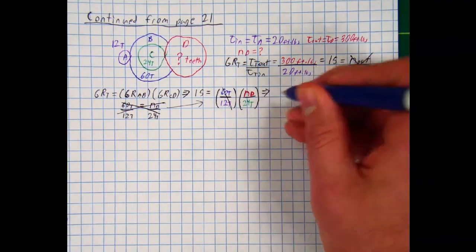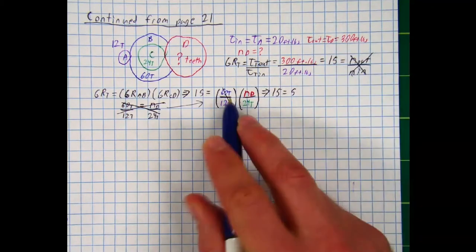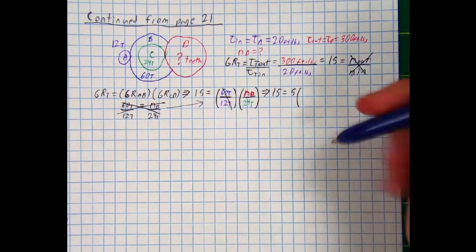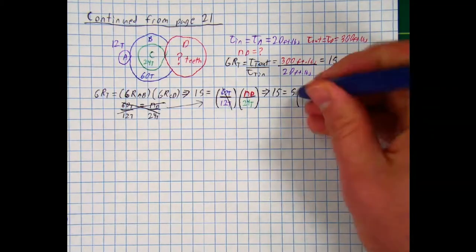And so I'm going to rewrite this equation then. I'm going to say 15 equals 5, this simplifies to 5, times still the number of teeth at D divided by 24 teeth.